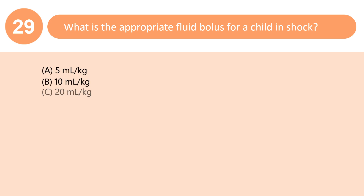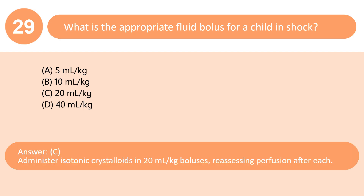What is the appropriate fluid bolus for a child in shock? A. 5 mL/kg. B. 10 mL/kg. C. 20 mL/kg. D. 40 mL/kg. Answer: C. Administer isotonic crystalloids in 20 mL/kg boluses, reassessing perfusion after each.